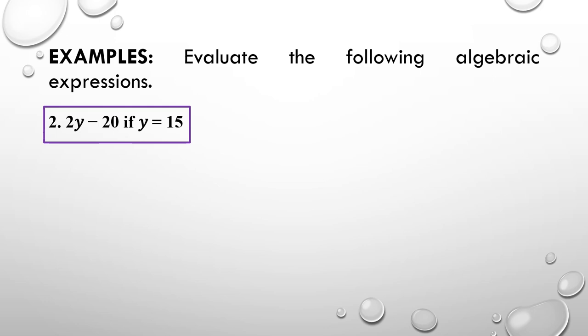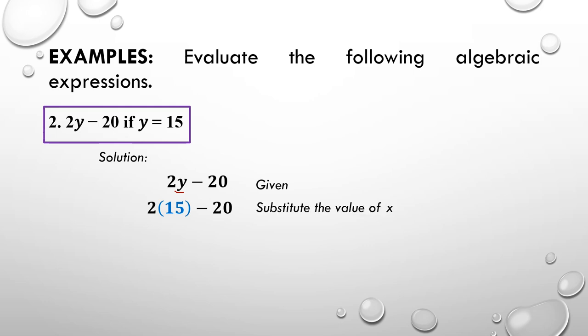For example 2, we are given the expression 2y minus 20. We need to find its value if y is equal to 15. We write the given: 2y minus 20, then substitute the value of y, giving us 2 times 15 minus 20. We multiply first: 2 times 15 equals 30. Then using PEMDAS we subtract: 30 minus 20 equals 10, which is our final answer.